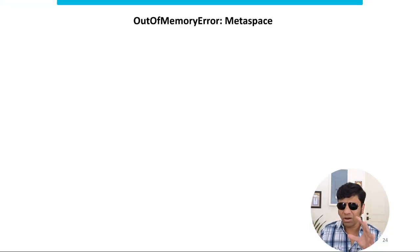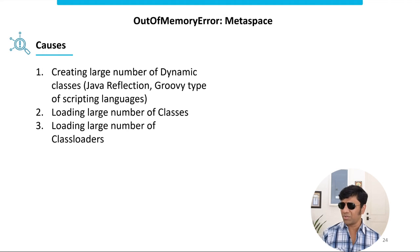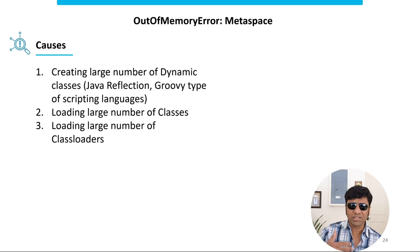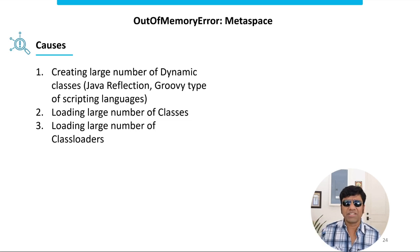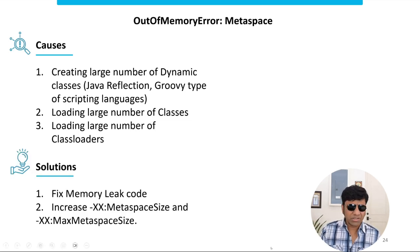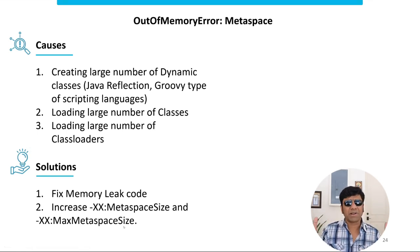Let's take a step back and see what causes this out of memory error metaspace. When you are creating a large number of dynamic classes - using reflection like what I used in my program, or using Groovy-type languages, or trying to load a lot of classes dynamically - then you get this error. Or when you are using a lot of third party jars and third party frameworks, your application's metaspace can get bloated and you can get this out of memory error. To fix it: if there is a leak happening in the code, go and fix the code. If not, increase your metaspace size with -XX:MaxMetaspaceSize if your application has been organically growing and needs to load more classes.